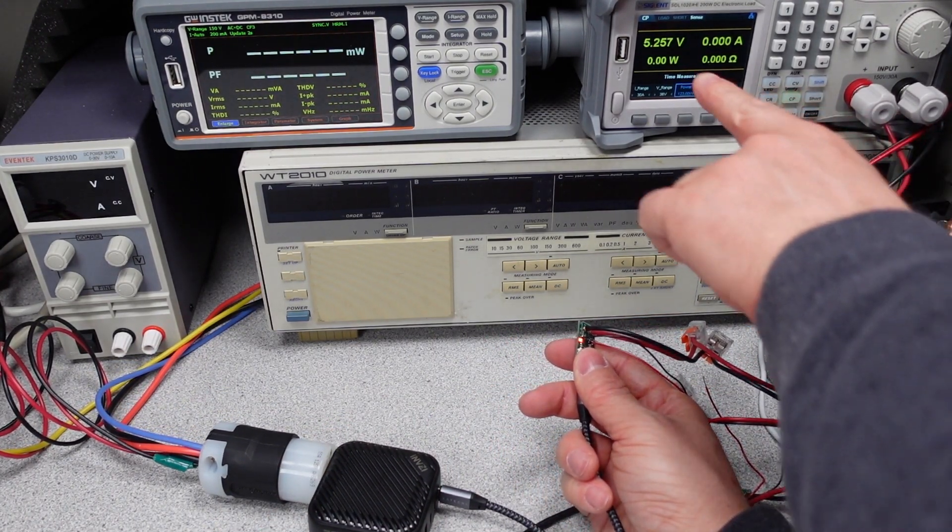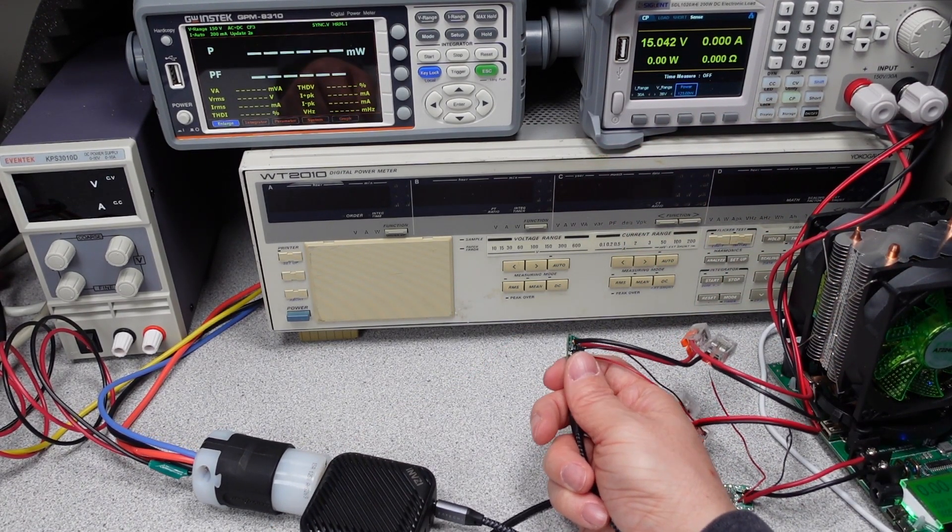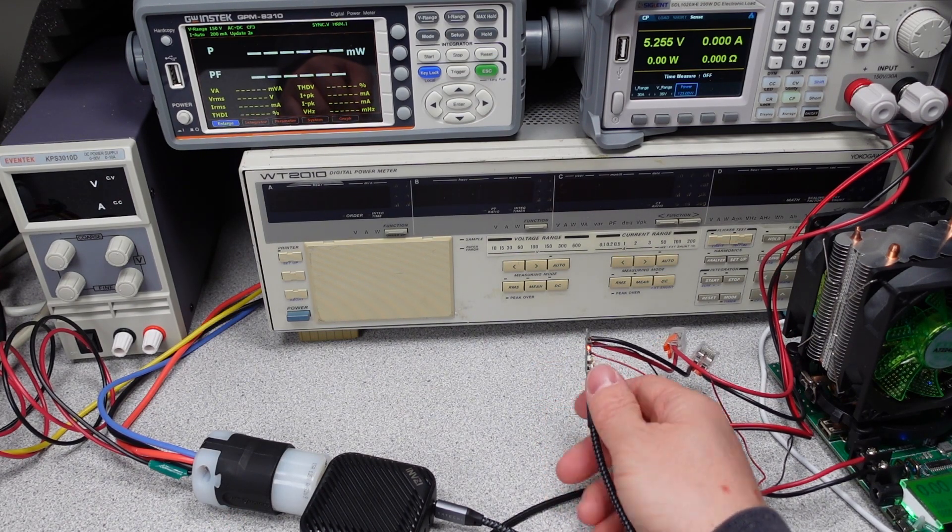And we can see up here on this screen, we have 5 volts right now. So we have 5, 9, 12, 15, and 20. We have the standard range of voltages for the output on that PD port.